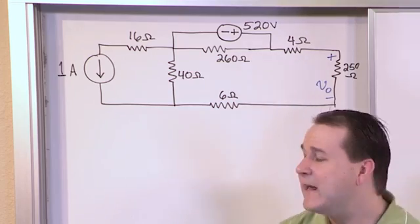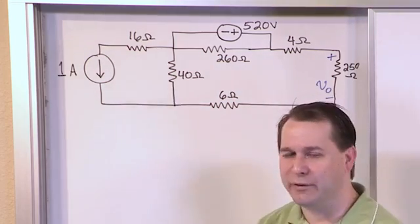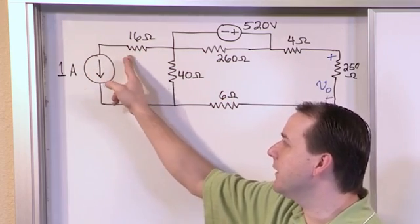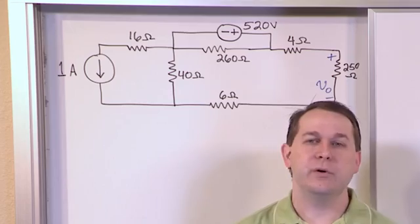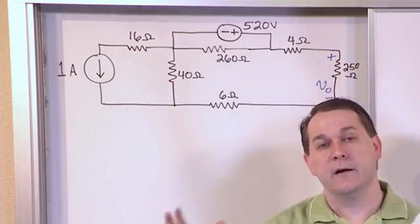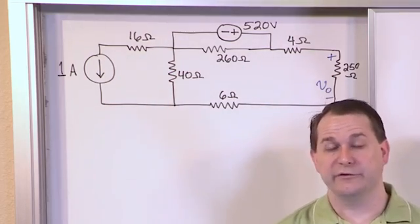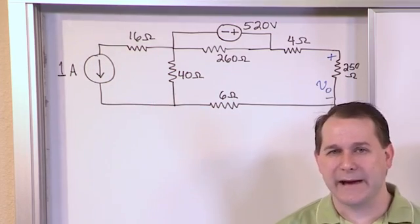Now let me make sure you understand. It doesn't mean that there's not current flowing through this resistor. I mean there has to be. There's a one amp source right here. So there's current going through a resistor. But what it means is from the point of view of changing this over to a voltage with a resistor, to doing the source transformation, the 16 ohms isn't going to matter.